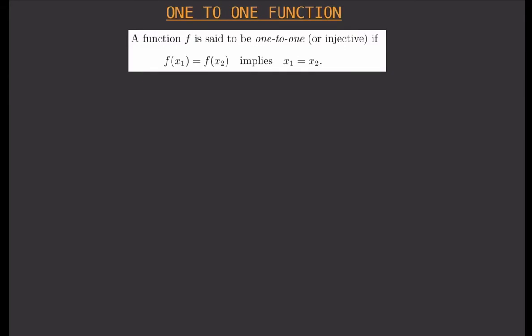As you can see, you have two values for y — f(x₁) and f(x₂) — but they are equal, which means there's only one y. That means there should also only be one x. You have x₁ and x₂, but they are equal, which means there's only one x. So that's what we mean by a 1-to-1 function: for one value of y, you can only have one value for x.